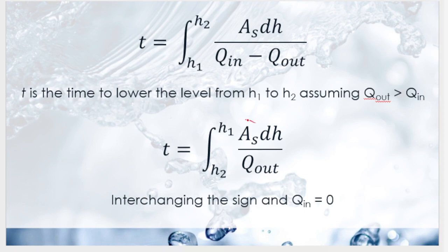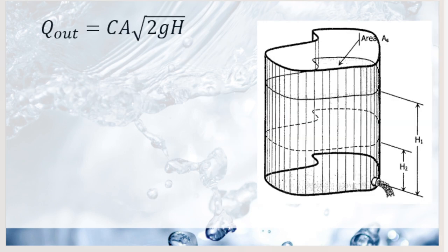From the concept of the orifice, we know Q-actual equals coefficient of discharge C times the theoretical discharge area times velocity. Since the outlet is an orifice, Q-out = C·A·√(2gh). Substituting and integrating, we get the final formula: T = (2·A-sub-s) / (C·A-sub-o·√(2g)) × (√H1 − √H2), where T is the time for head to change from H1 to H2.